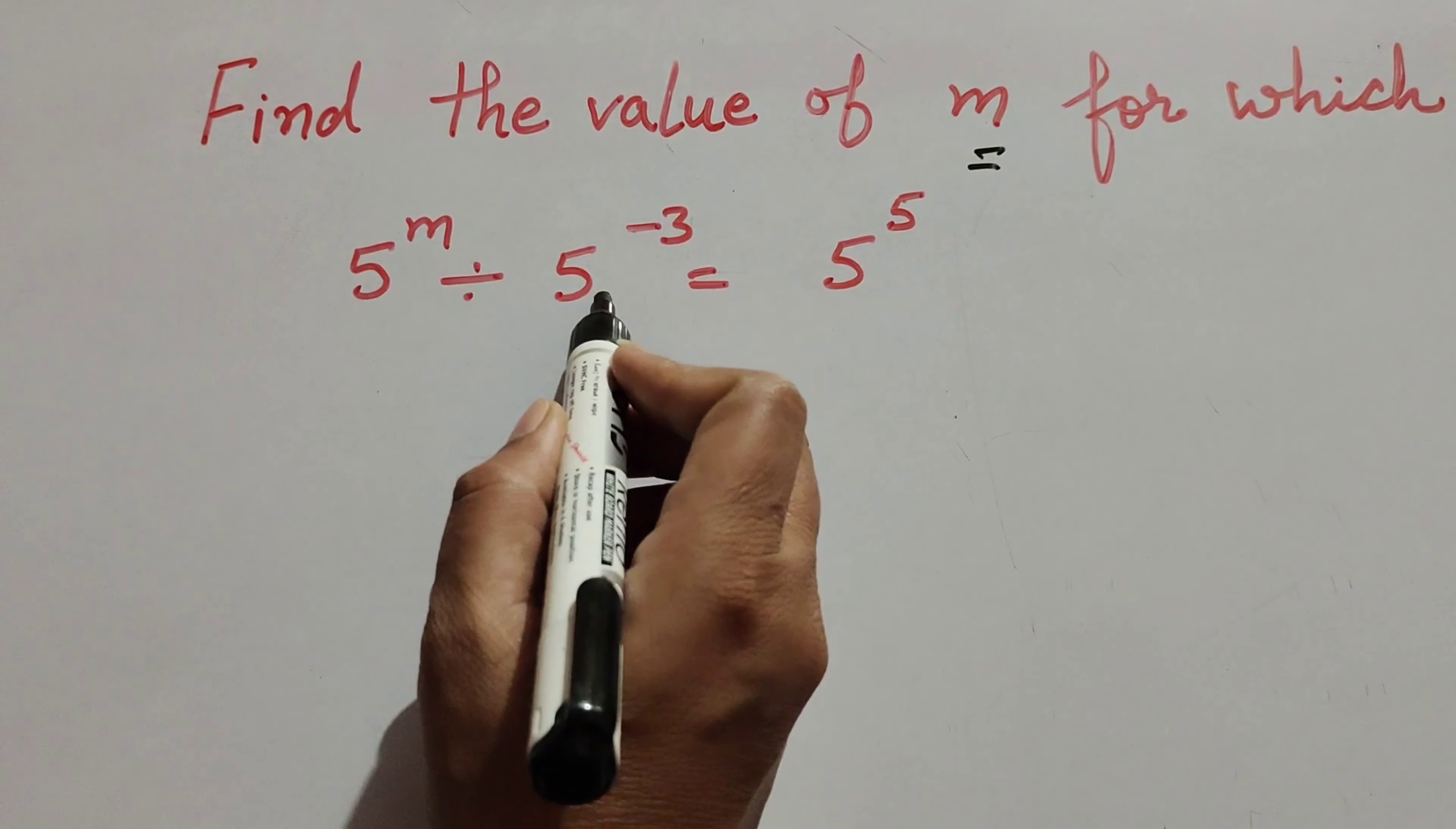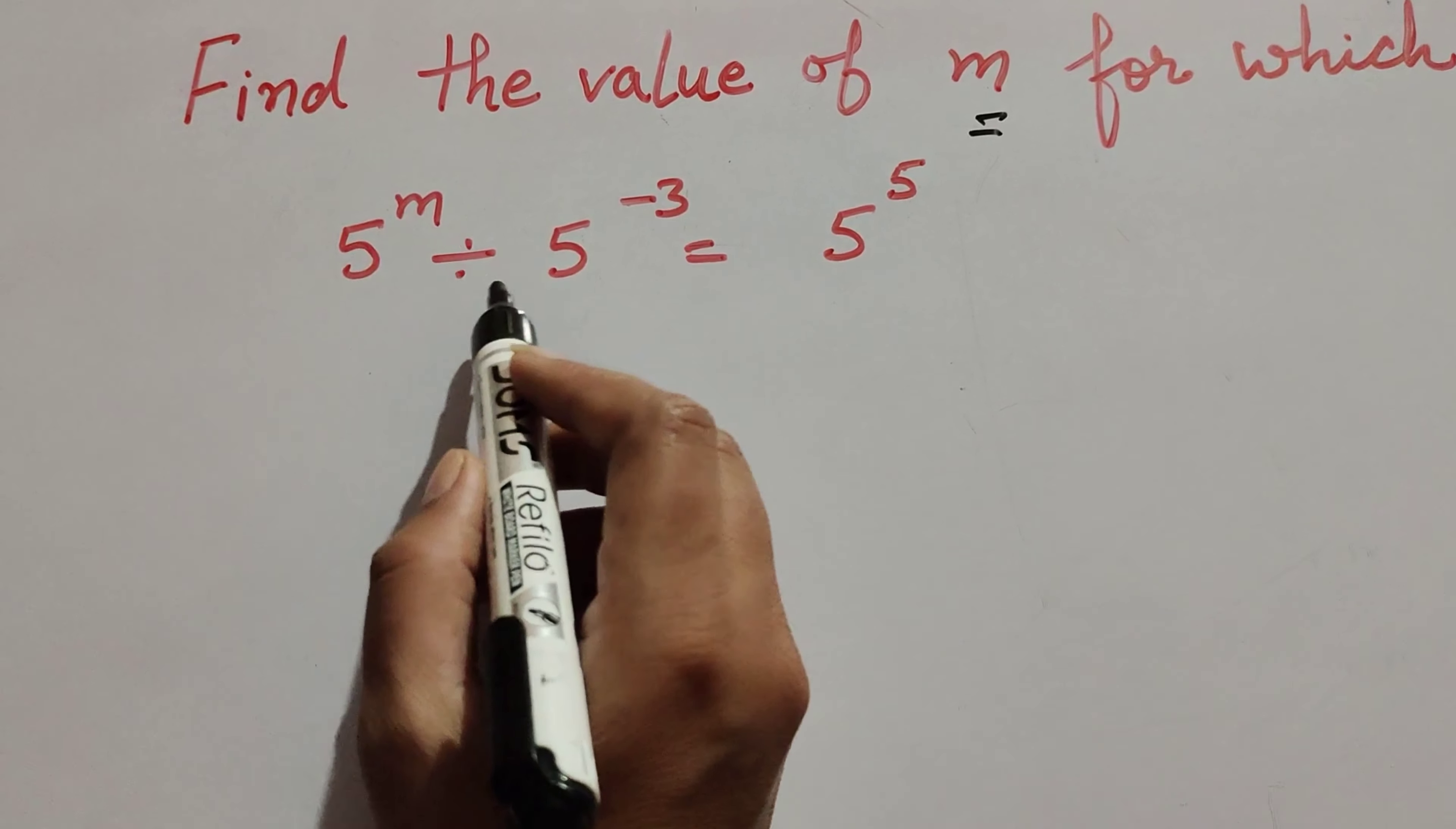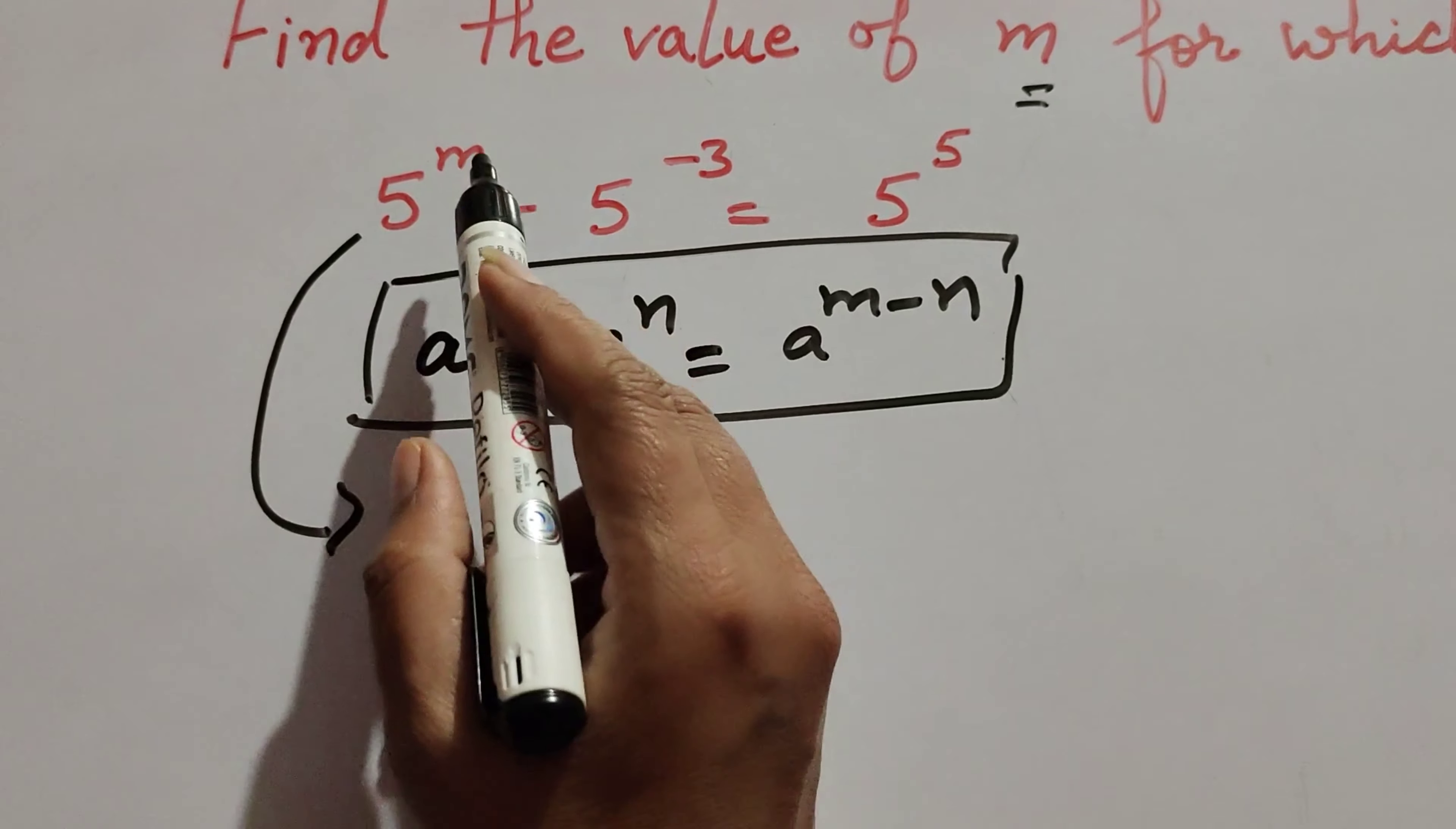In this problem, the base is the same but the exponents are different. When we divide two exponential forms with the same base but different exponents, we subtract the powers. We use the law of exponents: a^m divided by a^n equals a^(m-n). So in this problem, the base is 5.